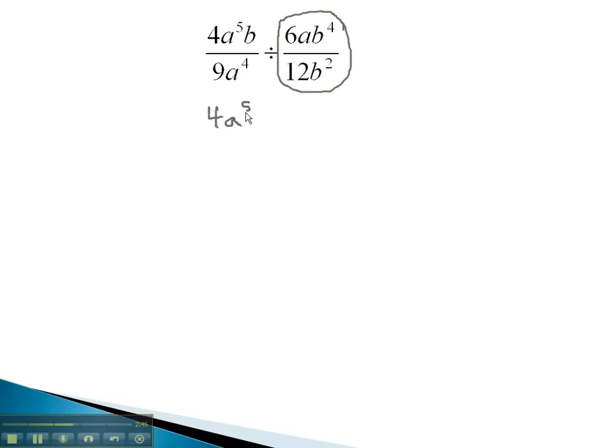We now have 4a to the 5th b over 9a to the 4th, times the reciprocal, which is 12b squared over 6a b to the 4th.